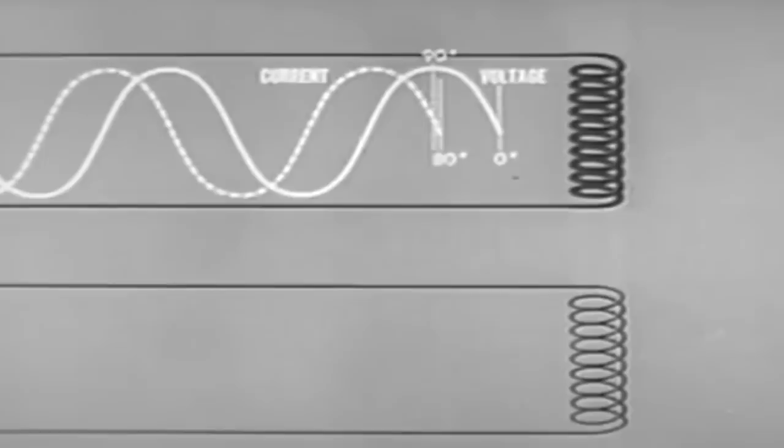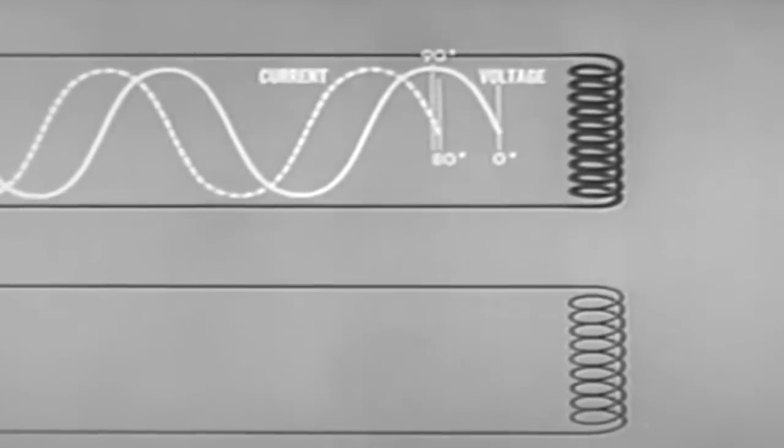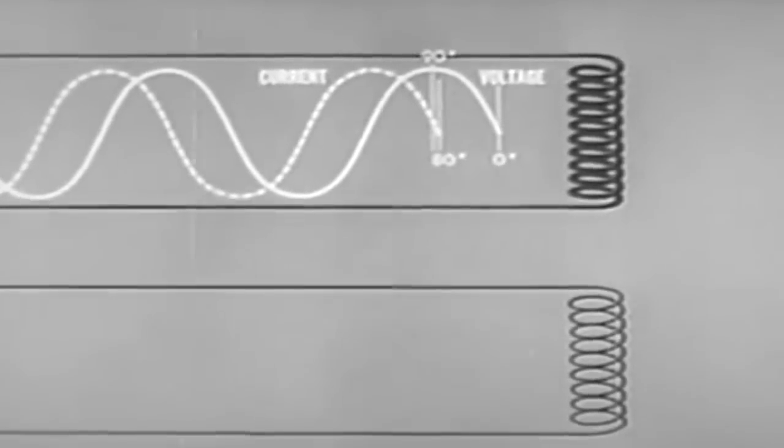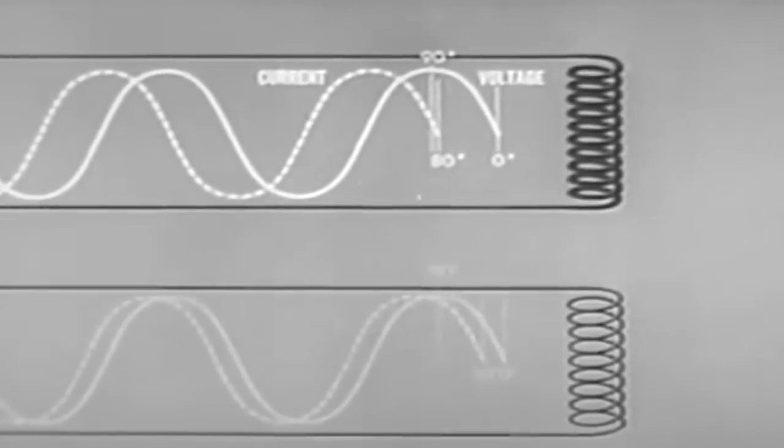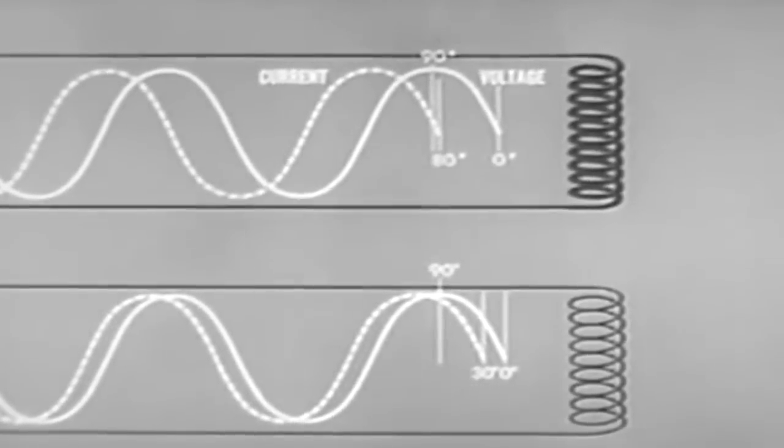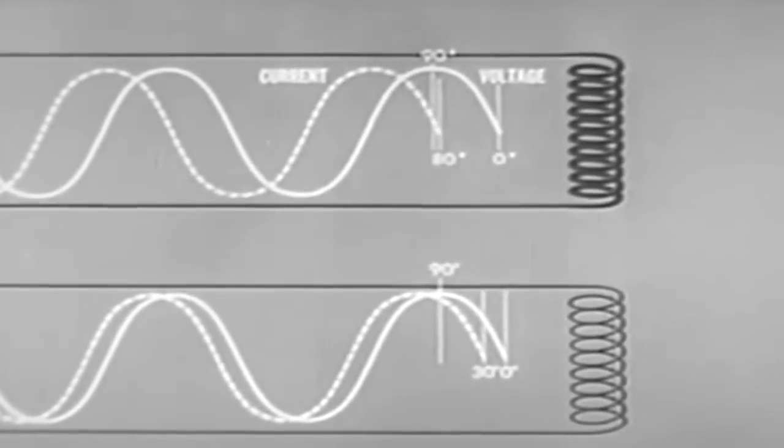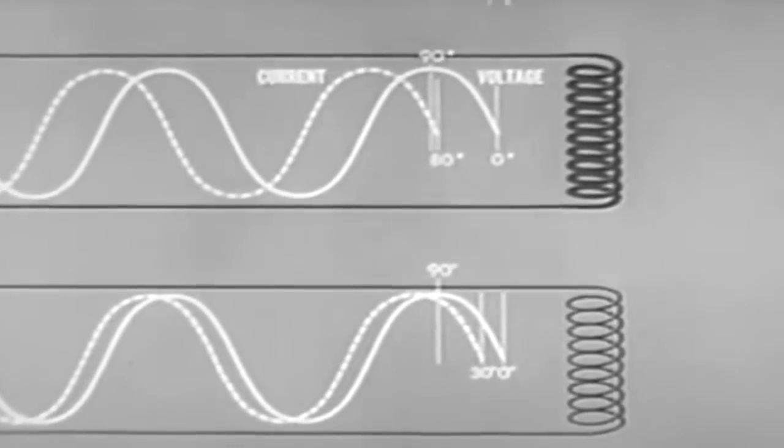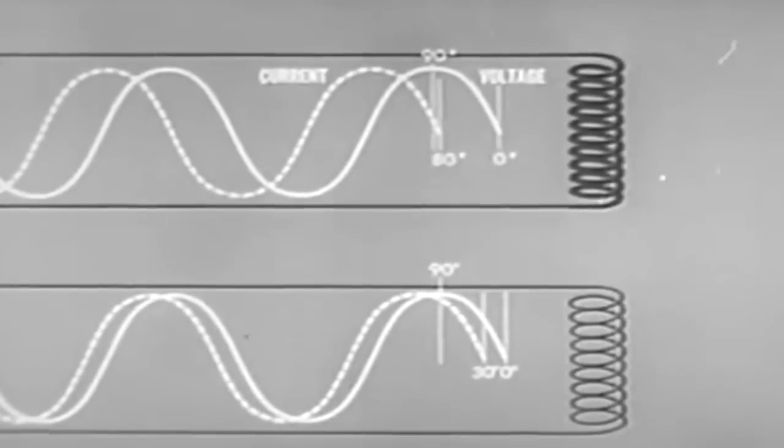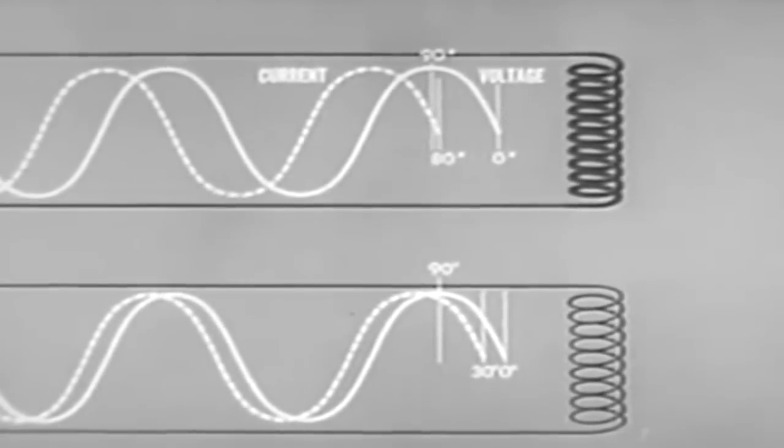The greater resistance of the starter winding, because of its smaller diameter, causes the current to lag the voltage by much less than 90 degrees, say 30 degrees. The net effect is then that the greater resistance of the starter windings causes the phase shift to be less than that of the main winding.